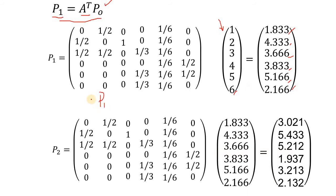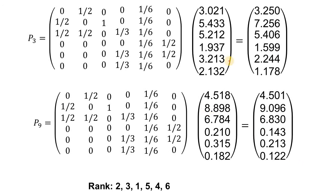In the next iteration, providing P1 and multiplying it with A transpose gives us the page rank values for the second iteration. We repeat this using all the page rank values from the first iteration, multiplied with the matrix — which does not change — giving us P2. The values keep changing, and using P2 gives us the values for the third iteration.